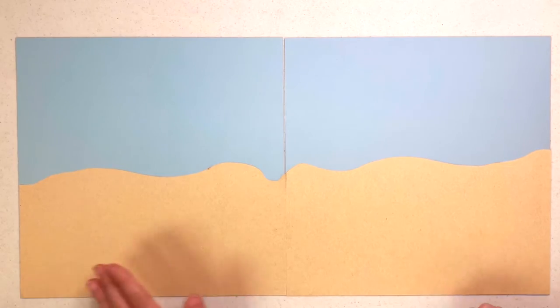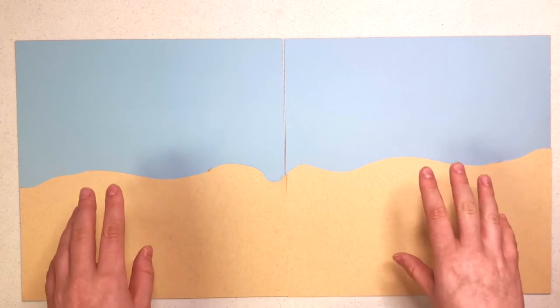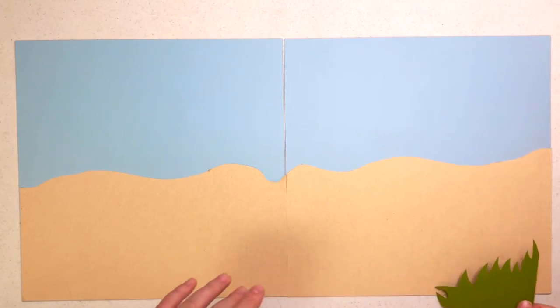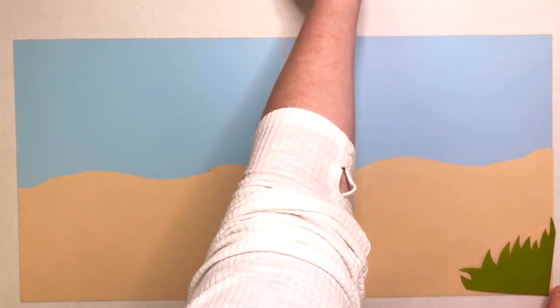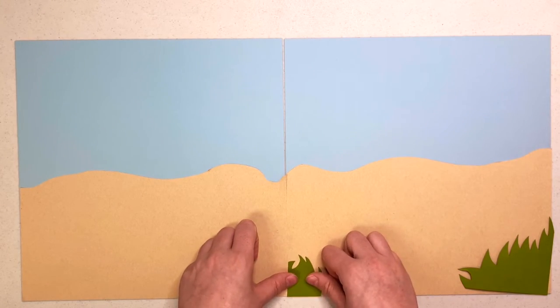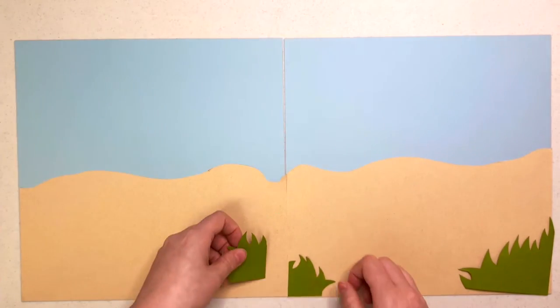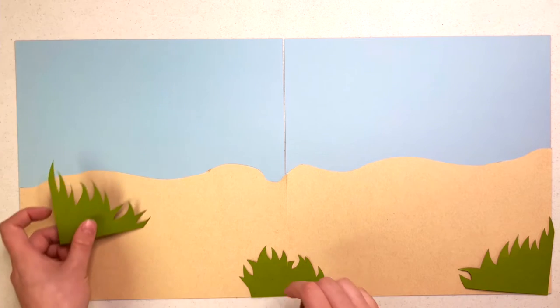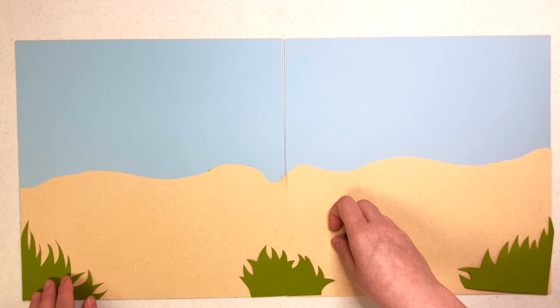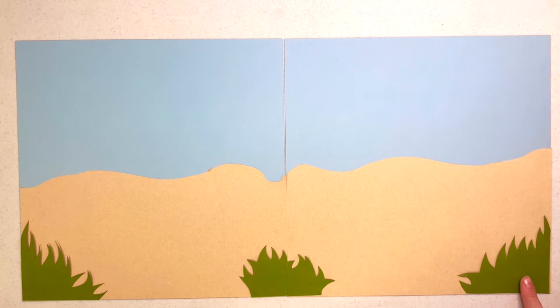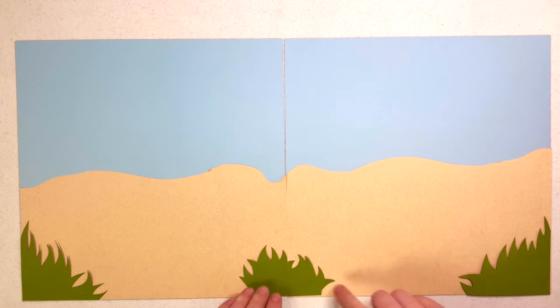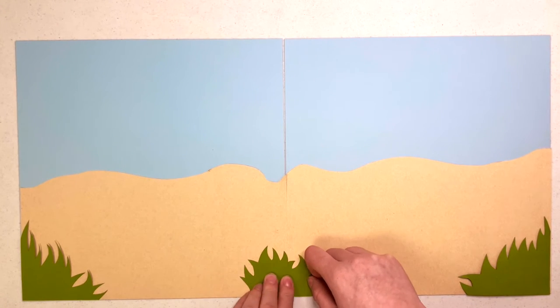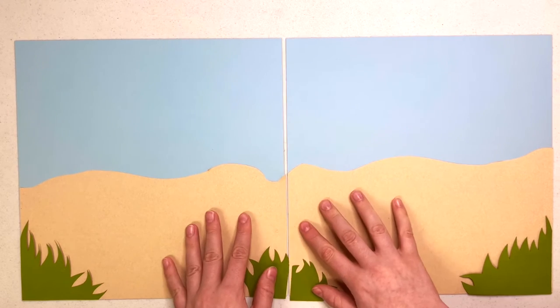All right you guys, so this is what it looks like when you adhesive this down. I think I'm going to go ahead and show you some of the other pieces that I cut. I'm really trying to create a sort of realistic looking layout with this one today. I wanted to make something fun and a little bit different from what I usually do. So in addition to the sand and the water slash sky I'm creating with this paper, I took some really pretty green cardstock and I cut out what is supposed to be sort of like grass.